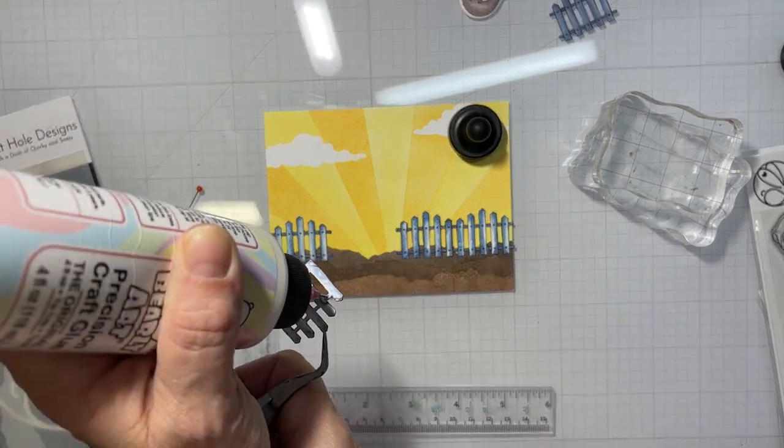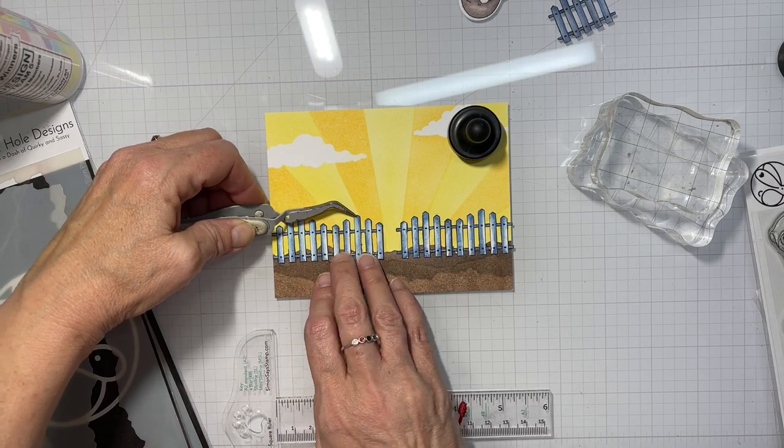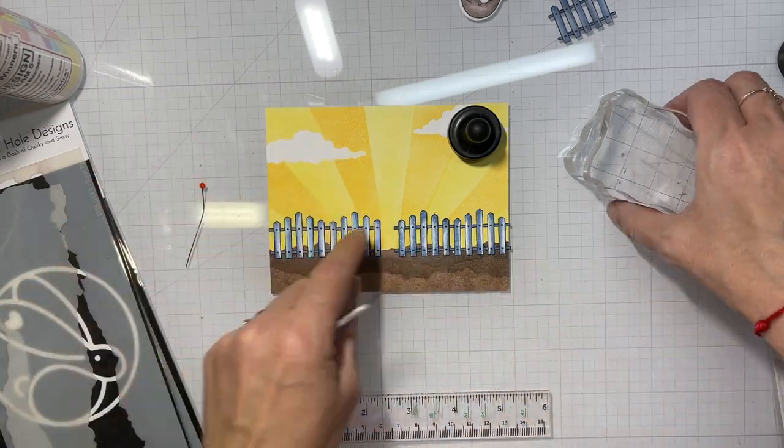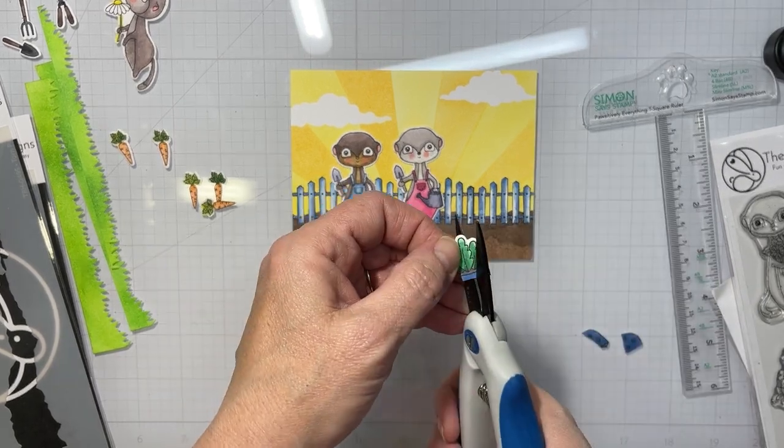So that I wouldn't have to color them in and try to make them match the sun. Just be careful if you're using an X-Acto blade. I say that every time because I'm clumsy. And I did this. They didn't quite meet in the middle, but that's okay.